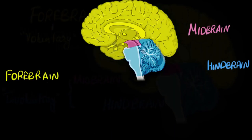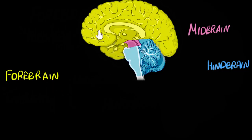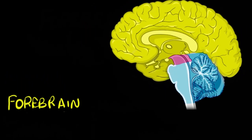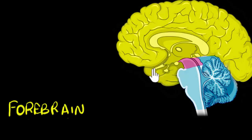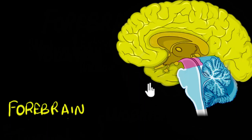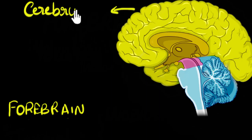With this in mind, let's look at the functions and parts in a little more detail. Looking at the forebrain, you can see two sections: the outer section, which contains a lot of folds, and the inner section. The big outer section is called the cerebrum — this whole outer section, which I've colored light yellow, is the cerebrum. We're not going to look at its further sub-parts.